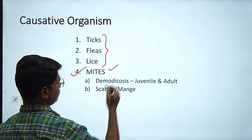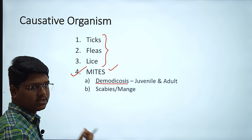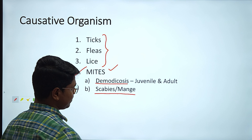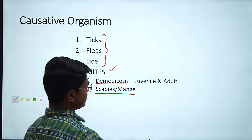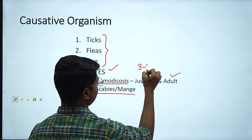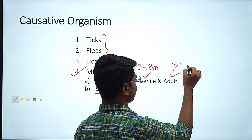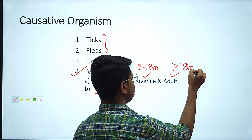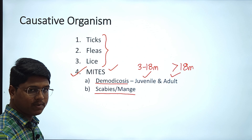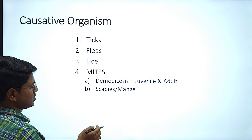In mites, two mites are very important. One is Demodex, that is demodicosis. Another is Sarcoptic mites, which cause scabies or mange. Demodicosis can be juvenile or adult. Juvenile means when it affects 3 to 18 month old dogs; adult means more than 18 months. We will discuss in detail regarding all the symptoms, treatments, and pictorial presentations.